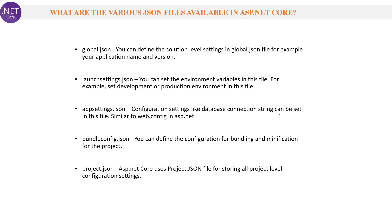Next question: What are the various JSON files available in ASP.NET Core? First is global.json, where you can define solution-level settings like application name and version. Second is launchsettings.json, where you can set environment variables such as development or production environment. Third is appsettings.json, for configuration settings like database connection string — similar to web.config in ASP.NET. Fourth is bundleconfig.json, for configuring bundling and minification of CSS and JS files. Finally, project.json stores all project-level configuration settings like the version of dependencies.